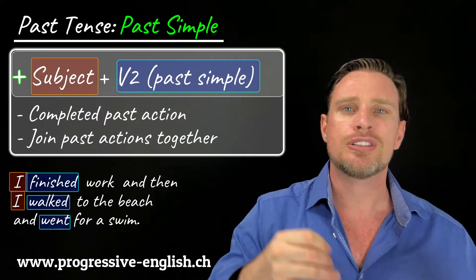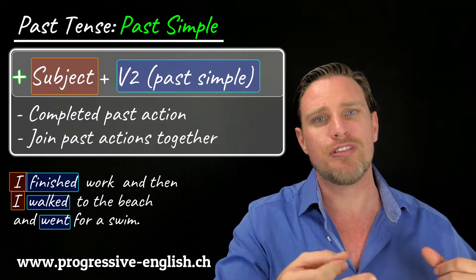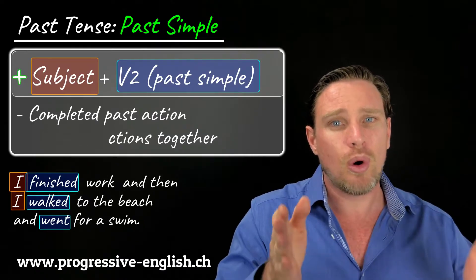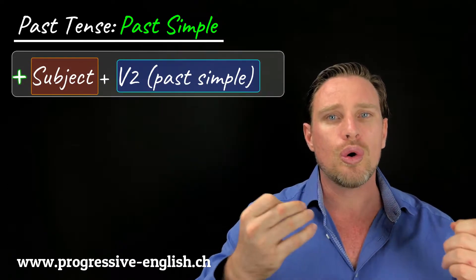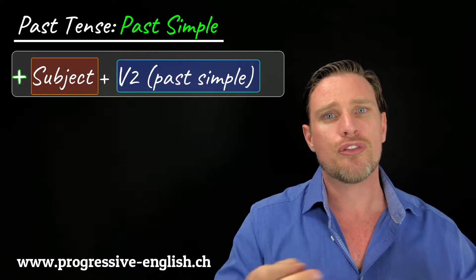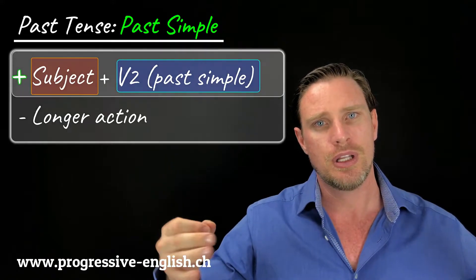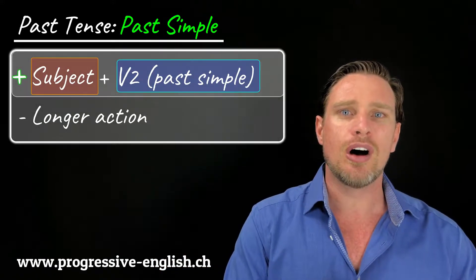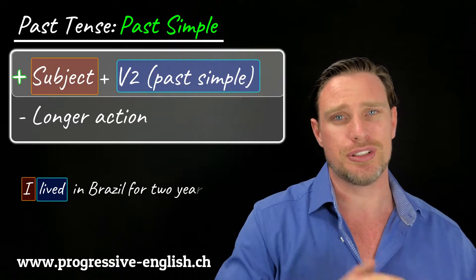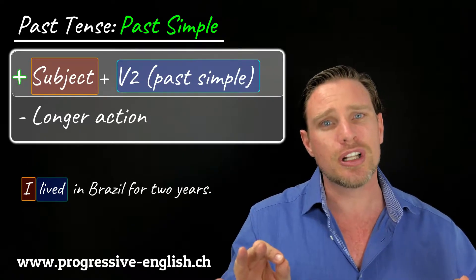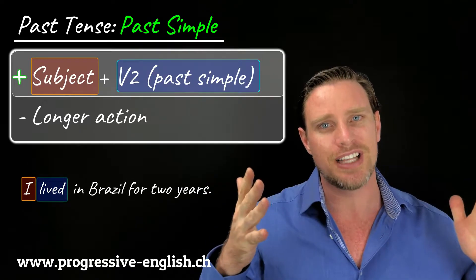Those two examples have been quite short actions. We can also use past simple for a longer action. For example: I lived in Brazil for two years. I don't live in Brazil anymore — it's a completed past action.